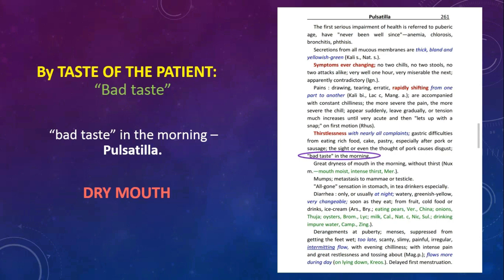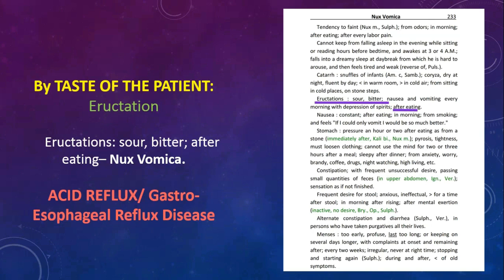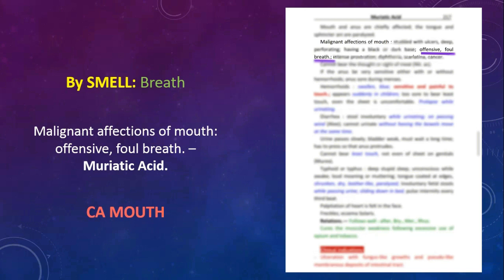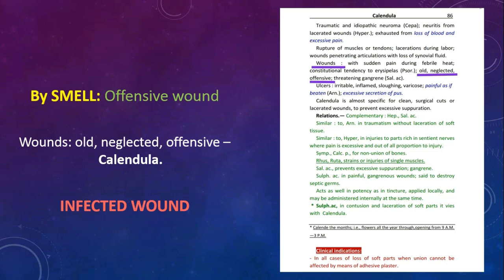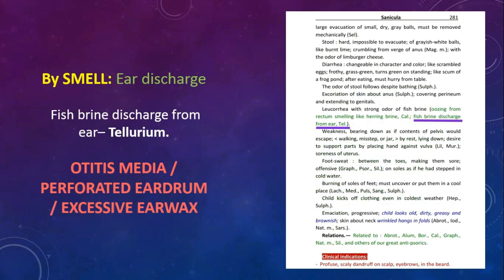By sense of taste of the patient: in condition of dry mouth, signs and symptoms are bad taste in the morning in Pulsatilla. Diagnosis of GERD — gastroesophageal reflux disease or acid reflux — through signs and symptoms of eructations sour bitter after eating in Nux Vomica. By sense of smell: diagnosis of CA mouth through signs and symptoms of malignant affections of mouth, offensive foul breath in Muriatic Acid. In condition of infected wound, signs and symptoms are wounds old and neglected, offensive in Calendula.